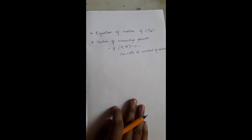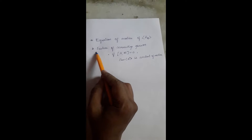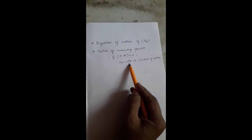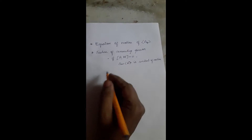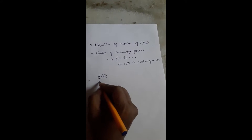We will obtain the equation of motion of the expectation value of an operator. From that, we can derive the feature of a commuting operator: if A commutes with the Hamiltonian H, then the expectation value of A is a constant of motion. So what we want is the time derivative of the expectation value of A.